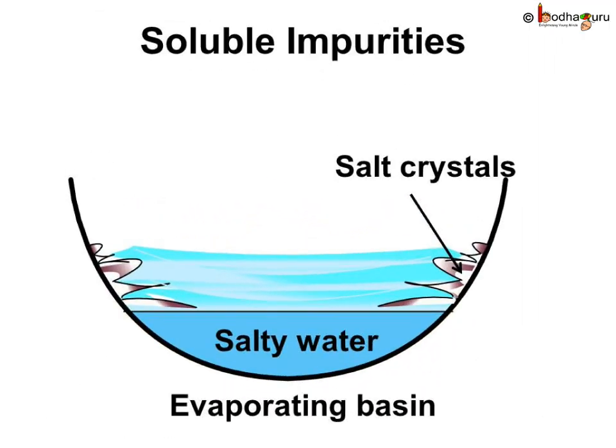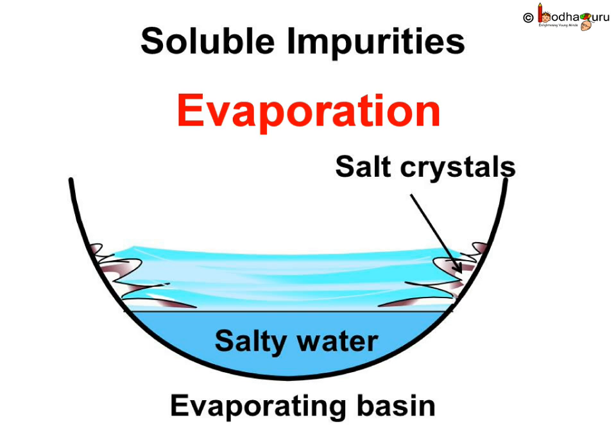How do we remove soluble impurities? Soluble impurities like salt cannot be removed by sedimentation or filtration as they get dissolved in the water. Let us see a method to remove soluble impurities. In this process, we boil the water. The water evaporates to become water vapor, and the salt is left behind. This process of changing water into water vapor is called evaporation.